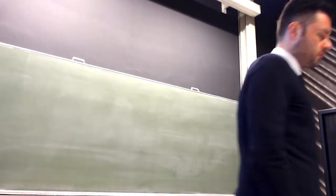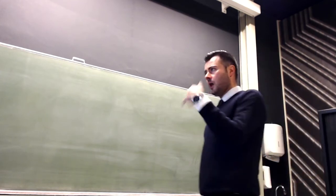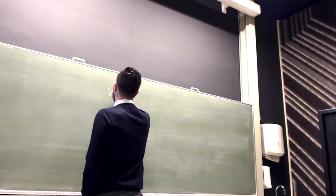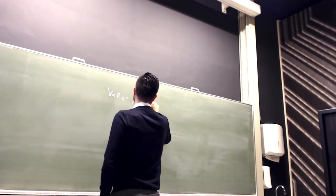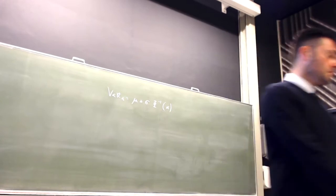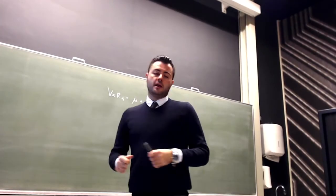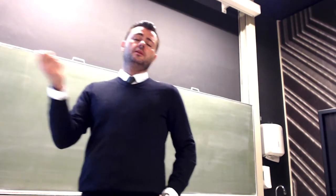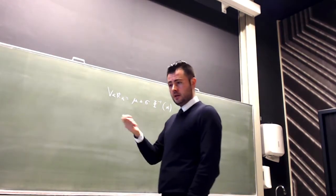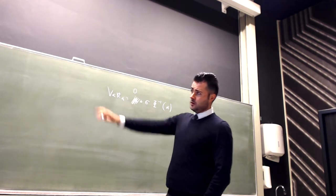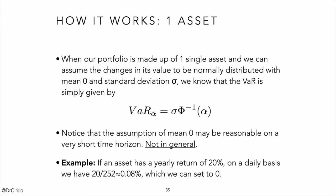A very quick recap. In our framework, if we assume the normal distribution, the Value at Risk at level alpha is equal to mu plus sigma times the quantile function of a standard normal computed at alpha. If we make the further assumption that on a daily basis the average return mu is zero, what remains is just sigma times the quantile function of the standard normal at alpha.